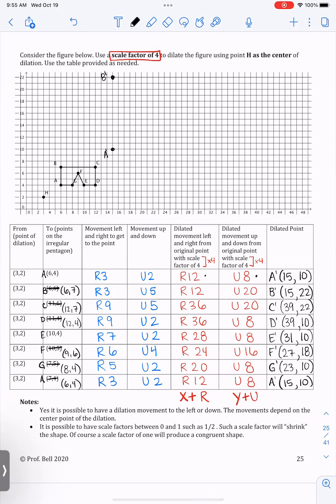B prime and now I want to go to 39 comma 22. C prime then 39 comma 10. D prime.